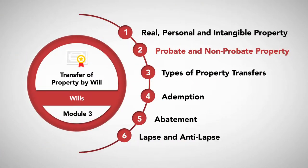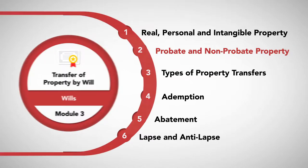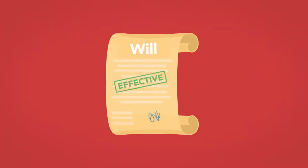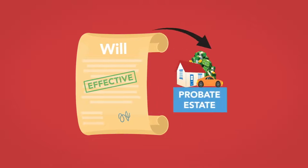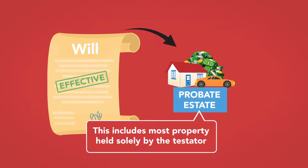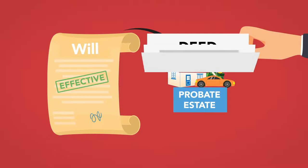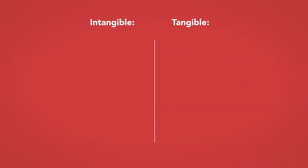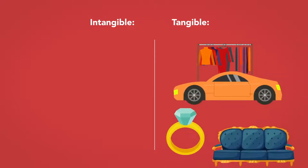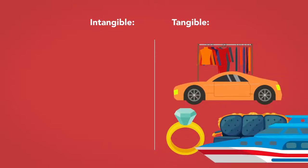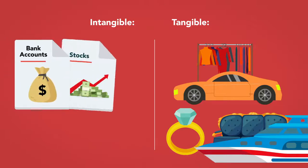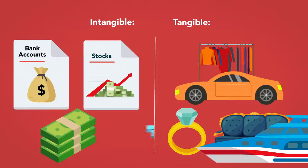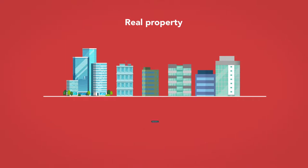Probate and non-probate property. A will is only effective to transfer property that becomes part of the probate estate. This includes most property held solely by the testator, such as real estate whose deed names the testator as sole owner, her tangible and intangible personal property, such as clothing, cars, jewelry, furniture, boats, and other personal items, along with her bank accounts, stocks, cash, and other assets. It also includes real property held by the testator as tenants in common with another.